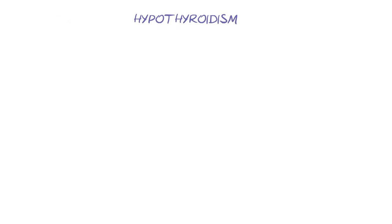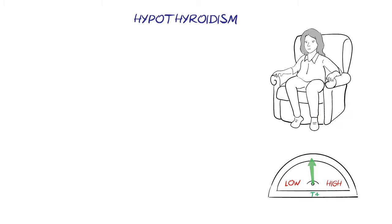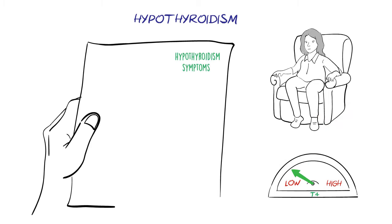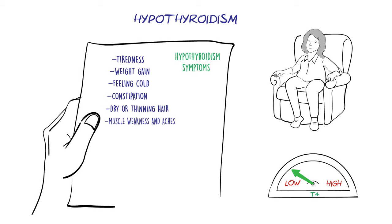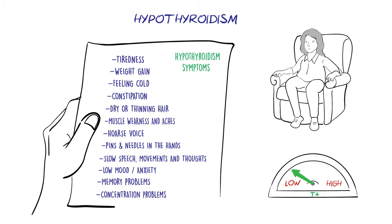The symptoms of hypo and hyperthyroidism are very wide-ranging. In hypothyroidism, the body's metabolism slows down. This can lead to symptoms such as tiredness, weight gain, feeling cold, constipation, dry or thinning hair, muscle weakness and aches, a hoarse voice, pins and needles in the hands, slow speech, movements and thoughts, low mood and anxiety, memory problems, and concentration problems. In babies and children, hypothyroidism can also affect normal growth and development if not treated properly.